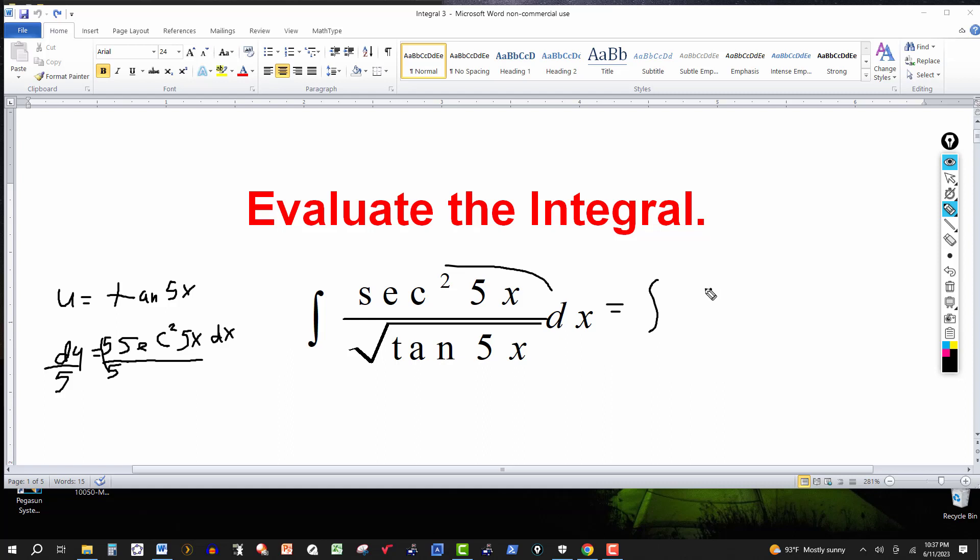So this will be du, replacing the secant squared of 5x dx by du over 5, and I put the 1/5th in front. And in the denominator we have the square root of tangent of 5x. But that's your u. So I'll just put u to the 1/2 power.